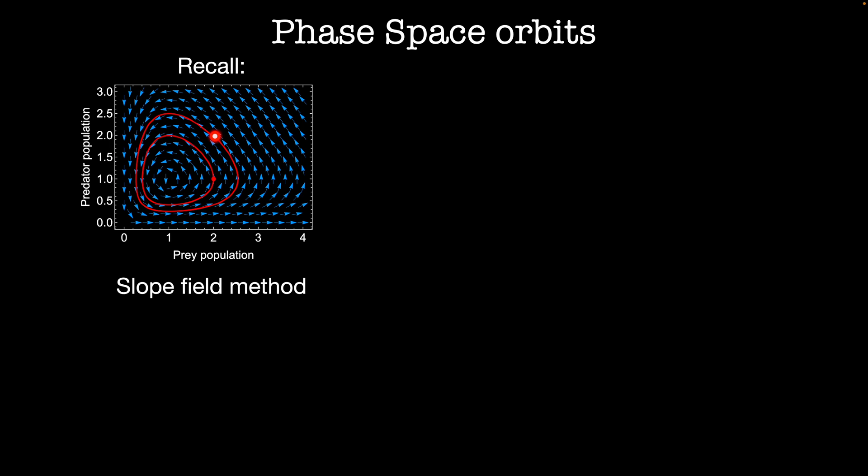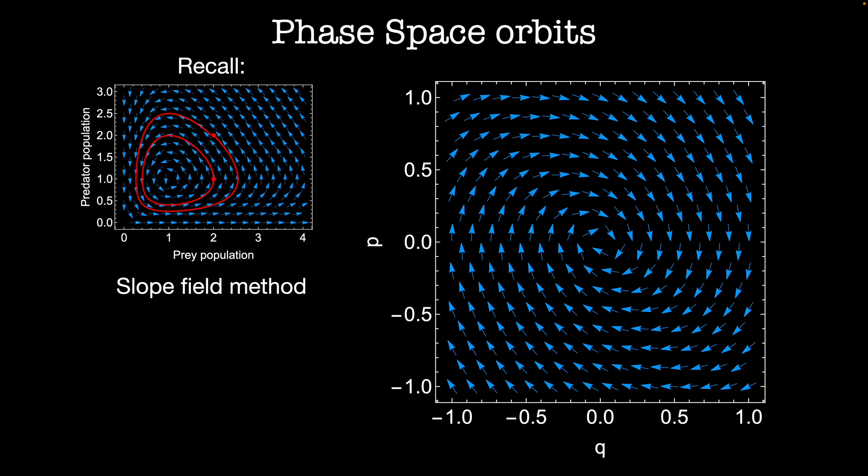We analyzed this using the slope field method. Every point in this space represents an initial condition, the number of predators and the number of prey at a given instant in time. Then integrating along this vector field, we get the total dynamics of the system.